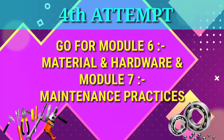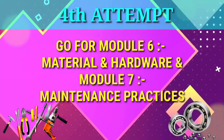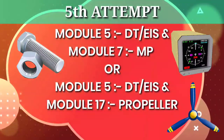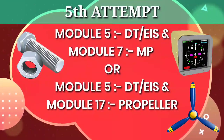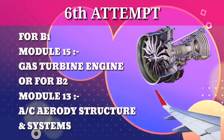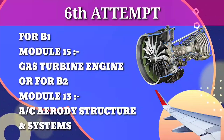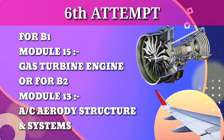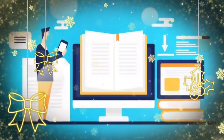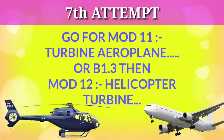In the 5th attempt, go for module 5 and module 7. Or if 7 is already given, go for module 5 and module 17. Both are medium modules but very important. If you are from Avionics, you can go for 5 and 14. In the 6th attempt, go for module 15 which is the gas turbine engine. If you are from Avionics, you have the lengthiest module which is module 13 — Aerodynamic Structure and Systems. After the 6th attempt you have completed roughly 2 years of the course with 9 to 10 modules cleared, which is quite good. At the 7th attempt, go for module 11 which is turbine aeroplane structure and systems. Or if you are B1.3, go for helicopter turbine which is module 12.